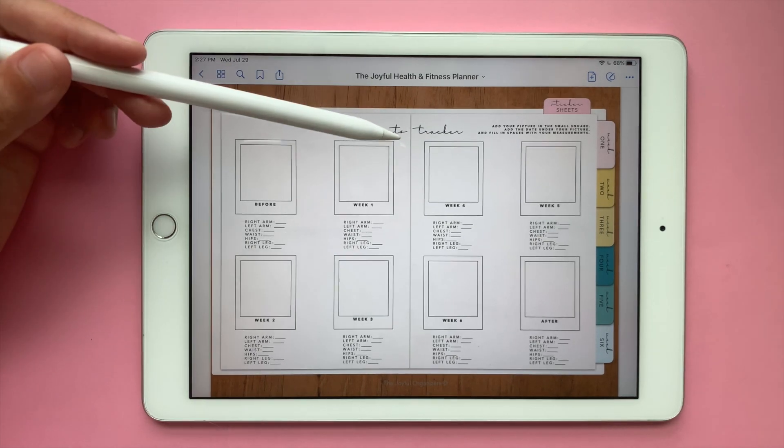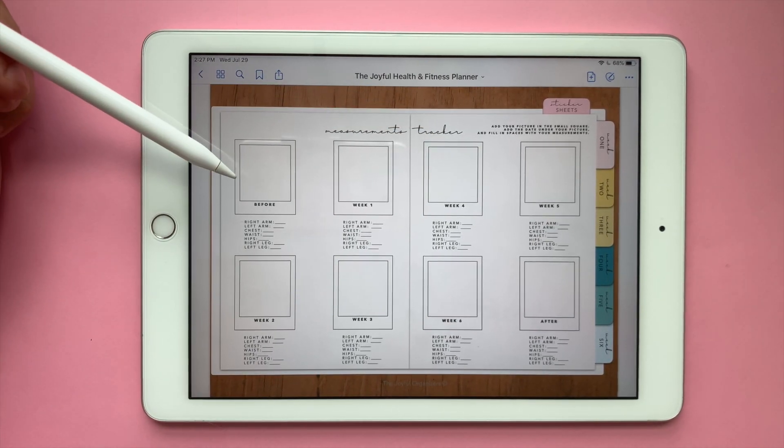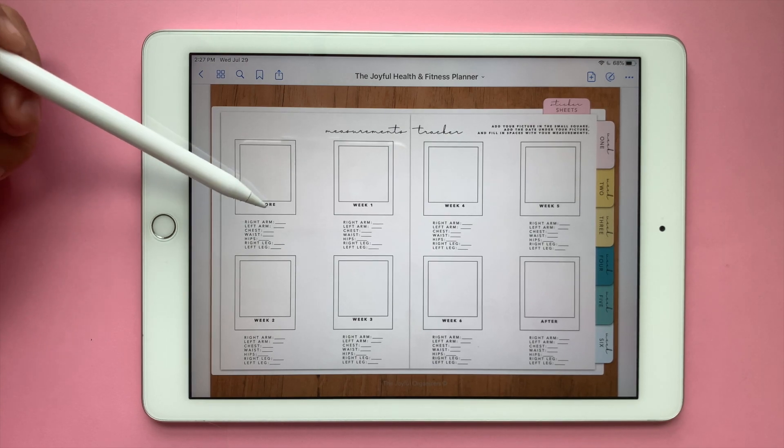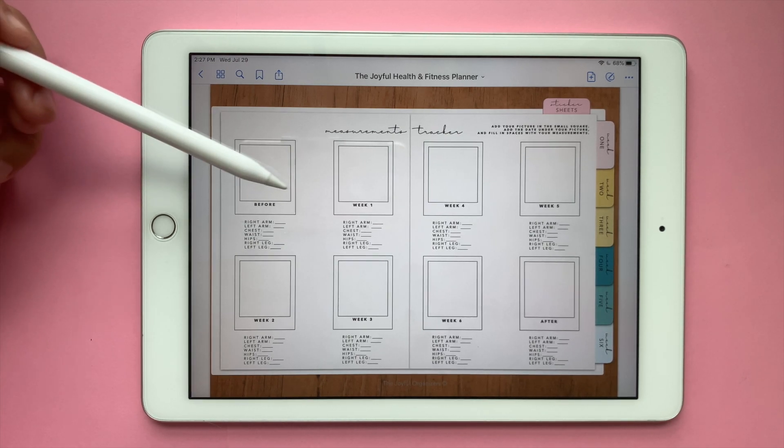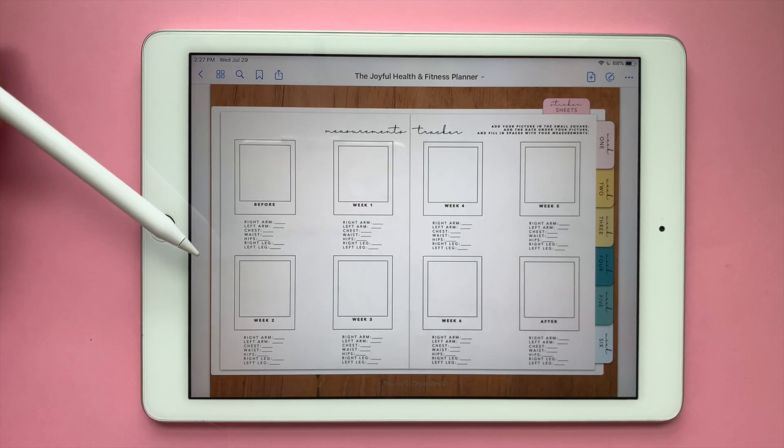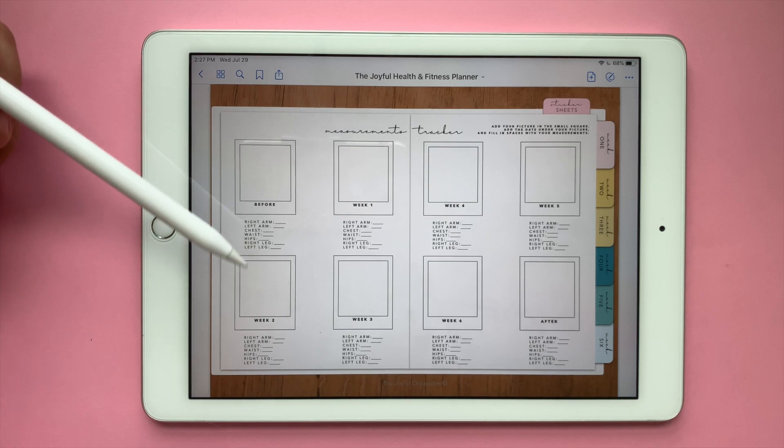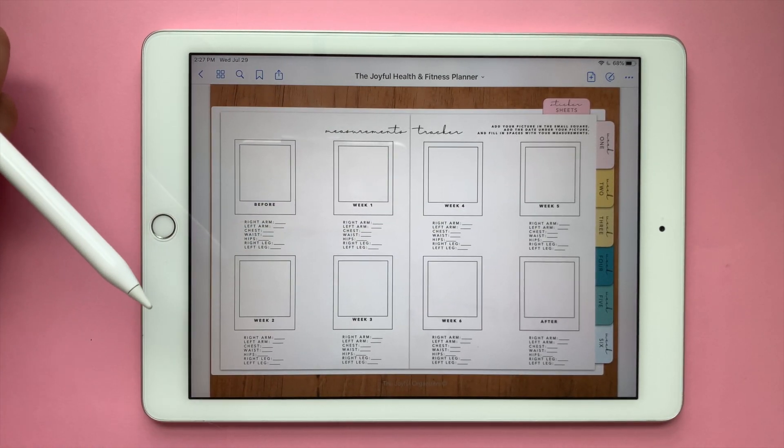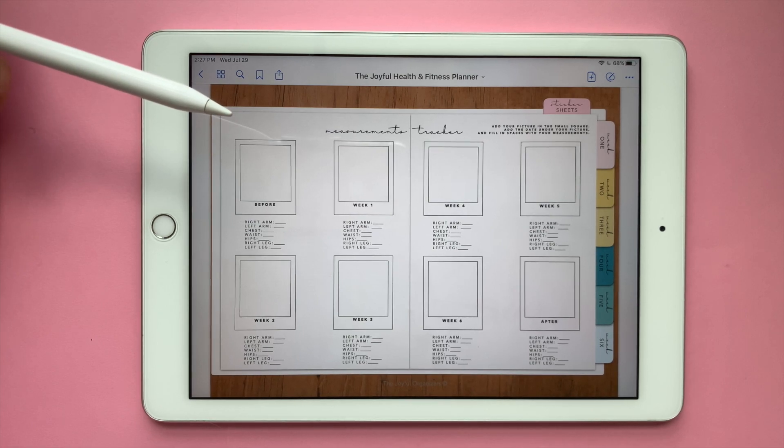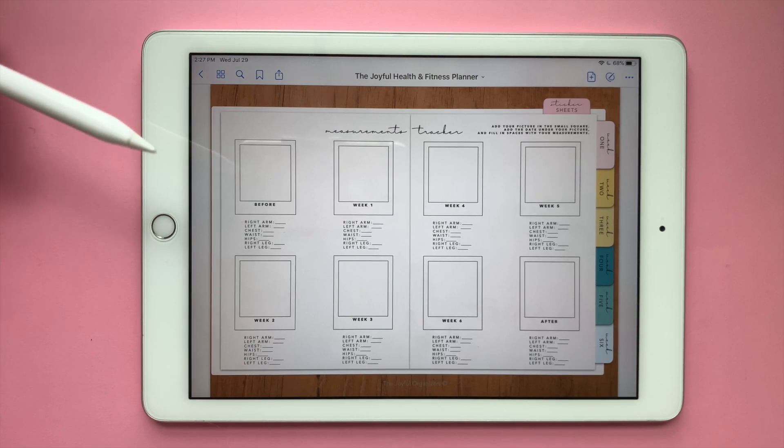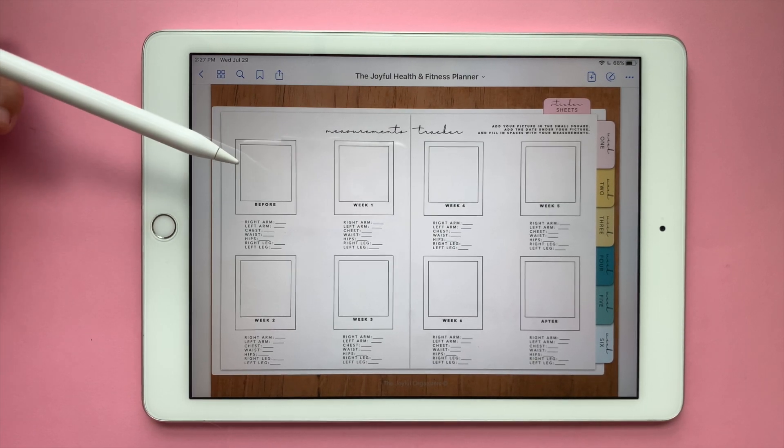Here you have your measurements tracker. You can add a picture in these little square layers so you can see your progress. I love using my favorite outfit so that way I can see also how my outfit is fitting me throughout the weeks. You can use your bathing suit, you can use whatever you want.